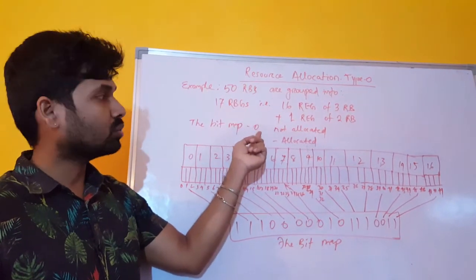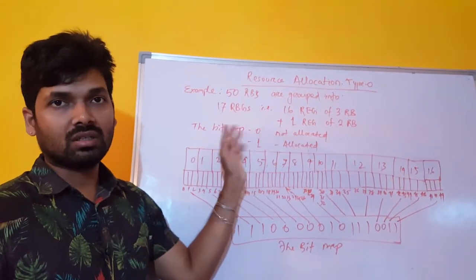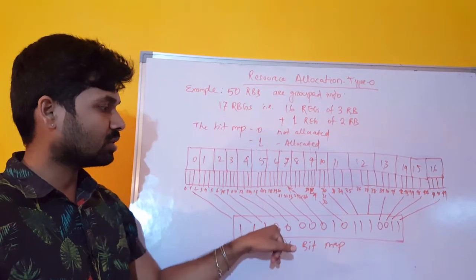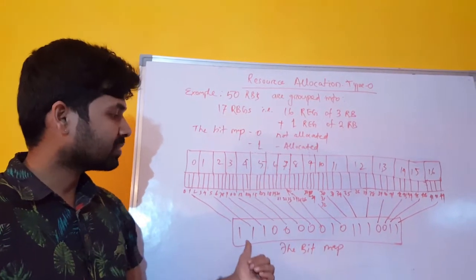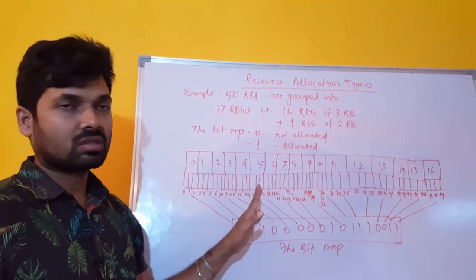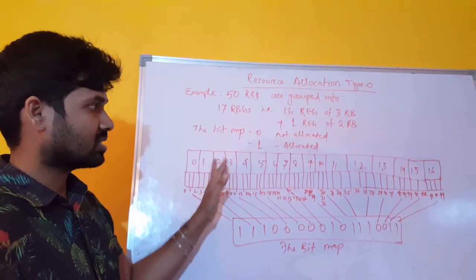The bitmap 0 is used for not allocated. If bitmap is saying 0, that means these resources are not allocated. If it is 1, then we have allocated the resources. Now let's see the example.